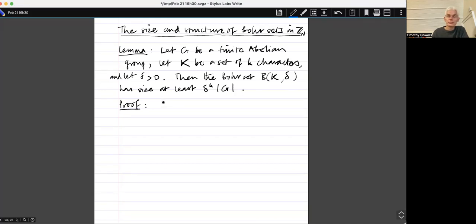The proof is quite simple. So what we'll do is the following. First of all, let's just give names to the characters in K. So we'll call it Chi 1 up to Chi K. And let U 1 up to U K be chosen independently and uniformly at random from the, it's sort of natural to say the half open interval 0.